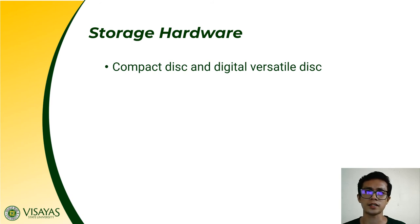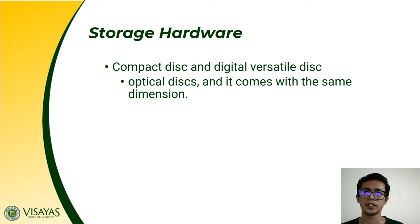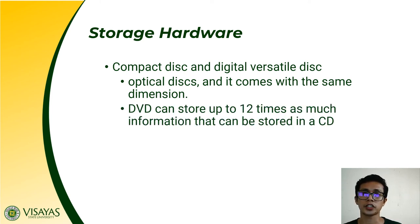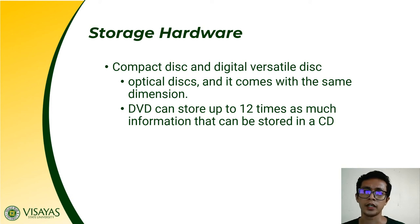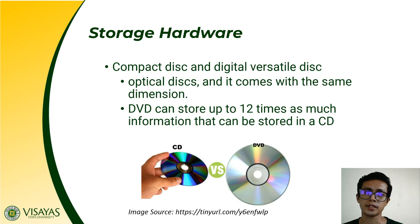Another secondary storage device is the CD and DVD. CD stands for compact disc, while DVD stands for digital versatile disc. Both have the same dimension but differ in their storage capacity. A CD can store up to 300 MB or 700 MB of data, whereas a DVD can store as much as 4 GB or 8 GB of data. Hence, your DVD can store a larger amount of data compared to your CD.